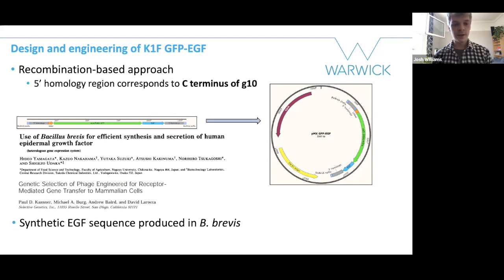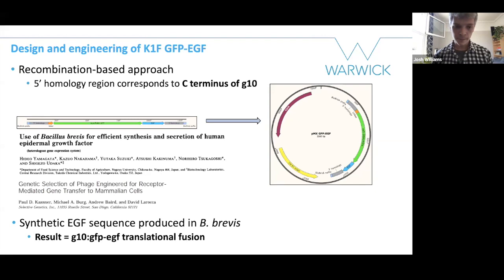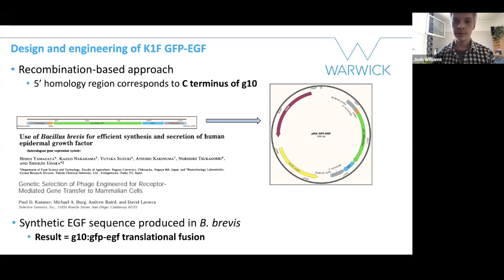Although a synthetic construct, this EGF sequence shows very similar activity to naturally-produced human EGF. It was also used in a study where they genetically engineered phage M13 to produce epidermal growth factor for gene transfer. Whilst this has been done before, phage have not been engineered to express EGF for the purpose of treating intracellular infections, so in that regard this work is novel. The result is to produce a G10-GFP-EGF translational fusion at the C-terminus.